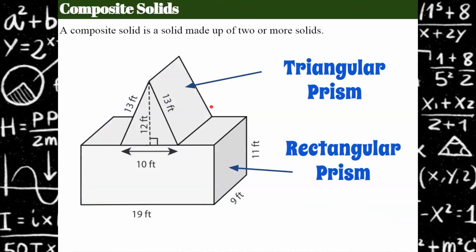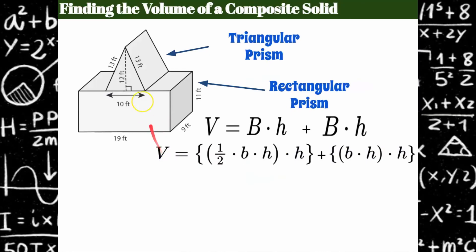Now let's talk about a composite solid. I have a composite solid here which is made up of a triangular prism and a rectangular prism. If you're asked how much volume could be held in here — it could be air, it could be water, it could be sand, it could be any number of things.